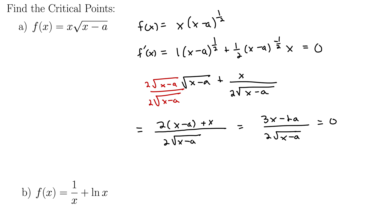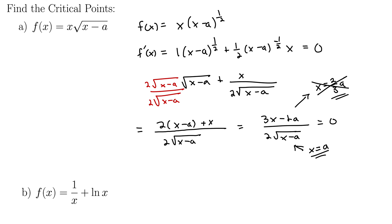Setting the numerator equal to zero gives x equals 2 thirds a, and setting the denominator equal to zero gives x equals a, where the derivative is not defined. Tossing out x equals 2 thirds a since it's not in the domain, we're left with x equals a as our critical point — the same result as before.